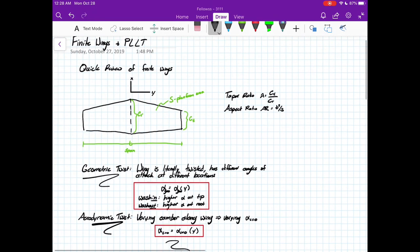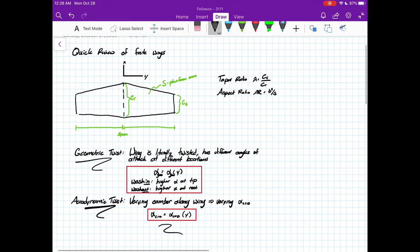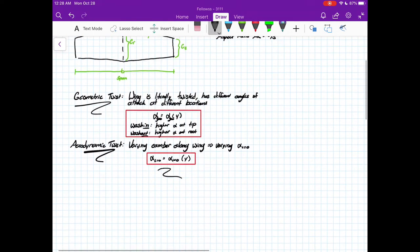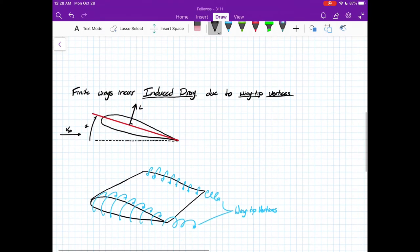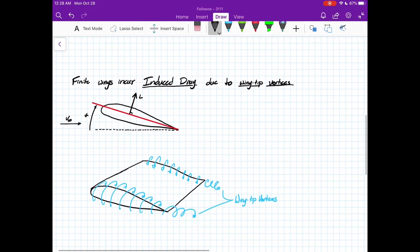This is very general - we have a lot of different options here with finite wings. Moving forward, finite wings have an issue with induced drag where wing tip vortices cause us to lose out on some of that lift we were getting with our infinite wings.